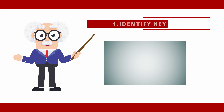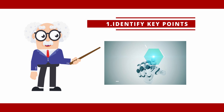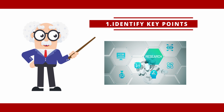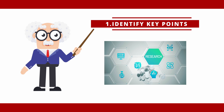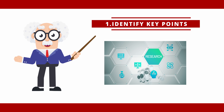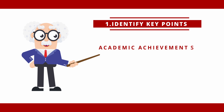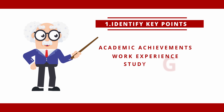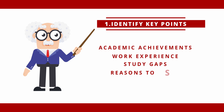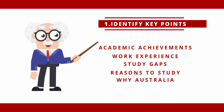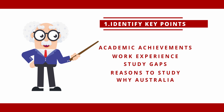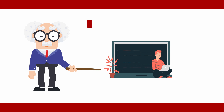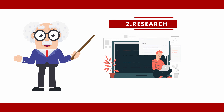Planning your SOP: identify key points. Before you begin writing, brainstorm and note down the key points you want to include. These should cover your academic achievements, relevant work experience, any gap between your studies, reasons for choosing the specific course or institution, reasons for why you chose Australia, and your career goals and future plans after you complete your studies.